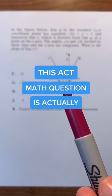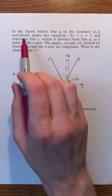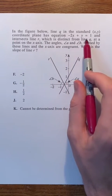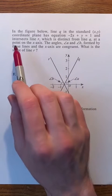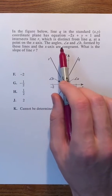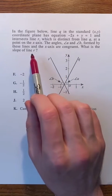This ACT math question is actually really easy. In the figure below, line q in the standard xy coordinate plane has equation -2x + y = 1 and intersects line r, which is distinct from line q at a point on the x-axis. The angles a and b formed by these lines and the x-axis are congruent. What is the slope of line r?